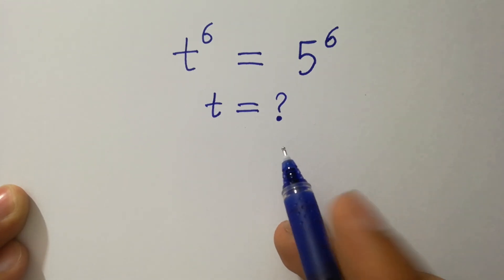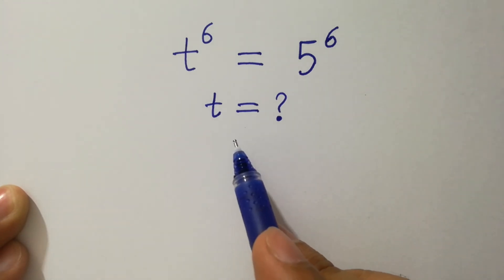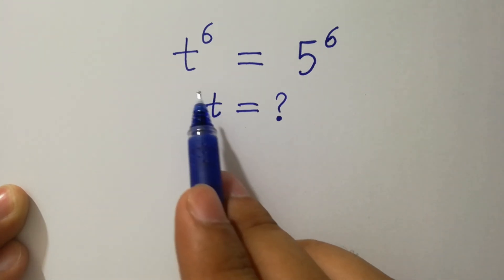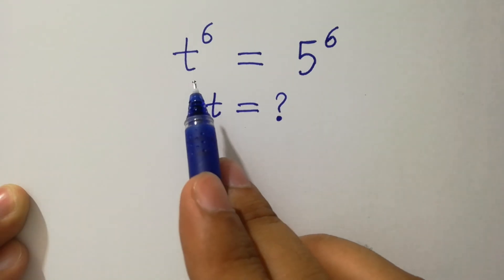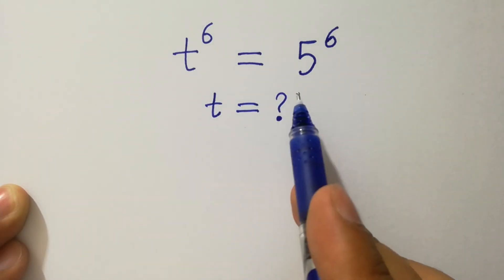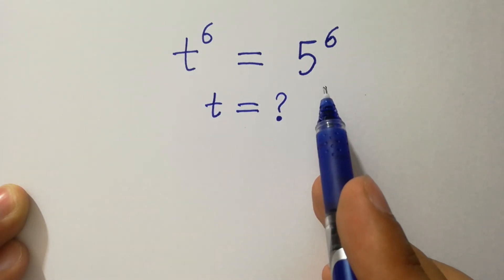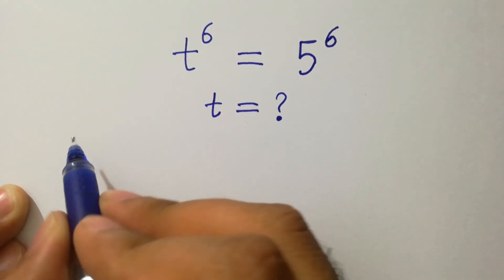Hello friends, find the value of t if t to the power 6 equals 5 to the power 6. Let's have a solution.